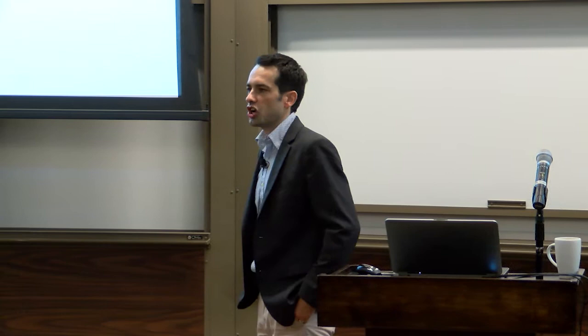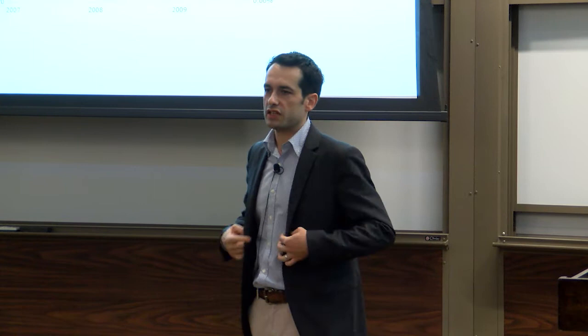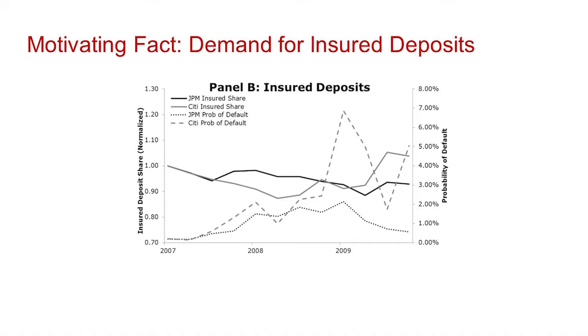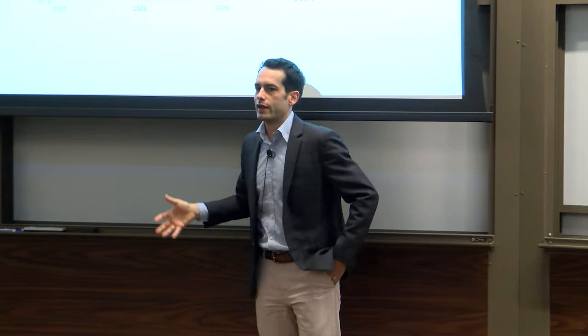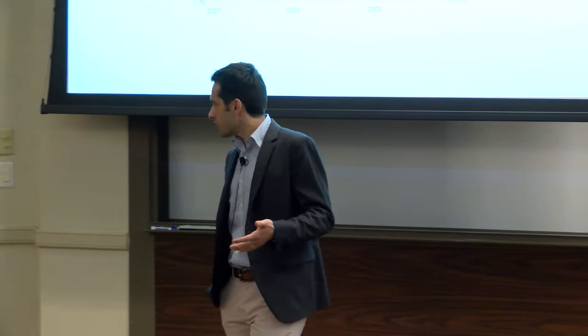If you think this is just because Citi had crappy services, here are the insured depositors of Citi. Same CDS picture, but now looking at Citi's market share of insured deposits versus JP Morgan — Citi may have actually gained a little market share in the insured deposit market. So it didn't seem like people just started disliking Citi Bank; it was the uninsured depositors that left. The data tell us depositors leave banks that are less sound, which means there's a potential for bank runs. Let's see if we can make this into a quantitative model.